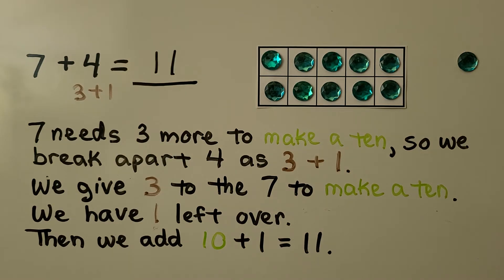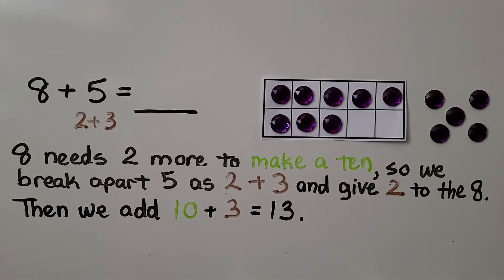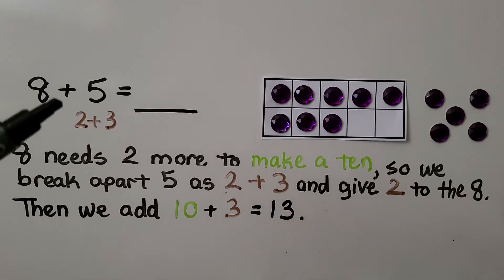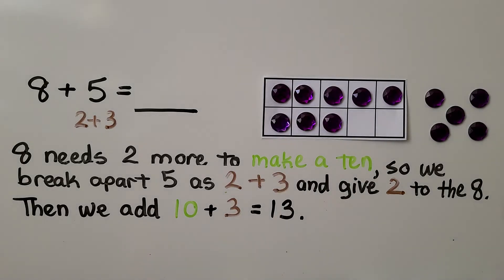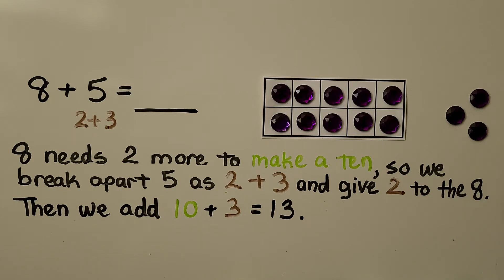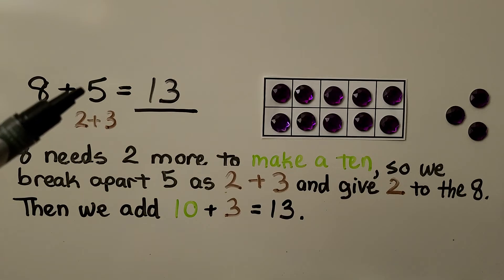Then we add 10 plus 1, which is equal to 11. We break apart the lesser add-end to help the 7 make a 10. Here we have 8 plus 5. We can break the 5 apart into a 2 plus 3, because the 8 needs 2 more to make a 10. So we break apart the 5 as a 2 plus 3 and give 2 to the 8. Then we add 10 plus the remaining 3. It's equal to 13. 5 was the lesser add-end, the smaller add-end, so we broke it apart to help the 8 become a 10.